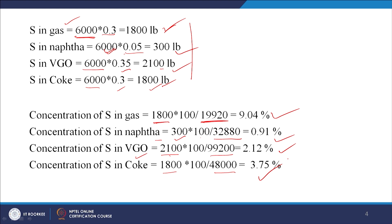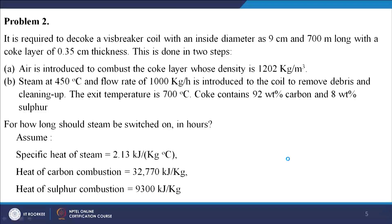Now coming to Problem 2. It says it is required to decoke a visbreaker coil with an inside diameter of 9 centimetre and 700 metre long, with a coke layer of 0.35 centimetre thickness. This is done in two steps: first, air is introduced to combust the coke layer whose density is 1,202 kg per metre cube.